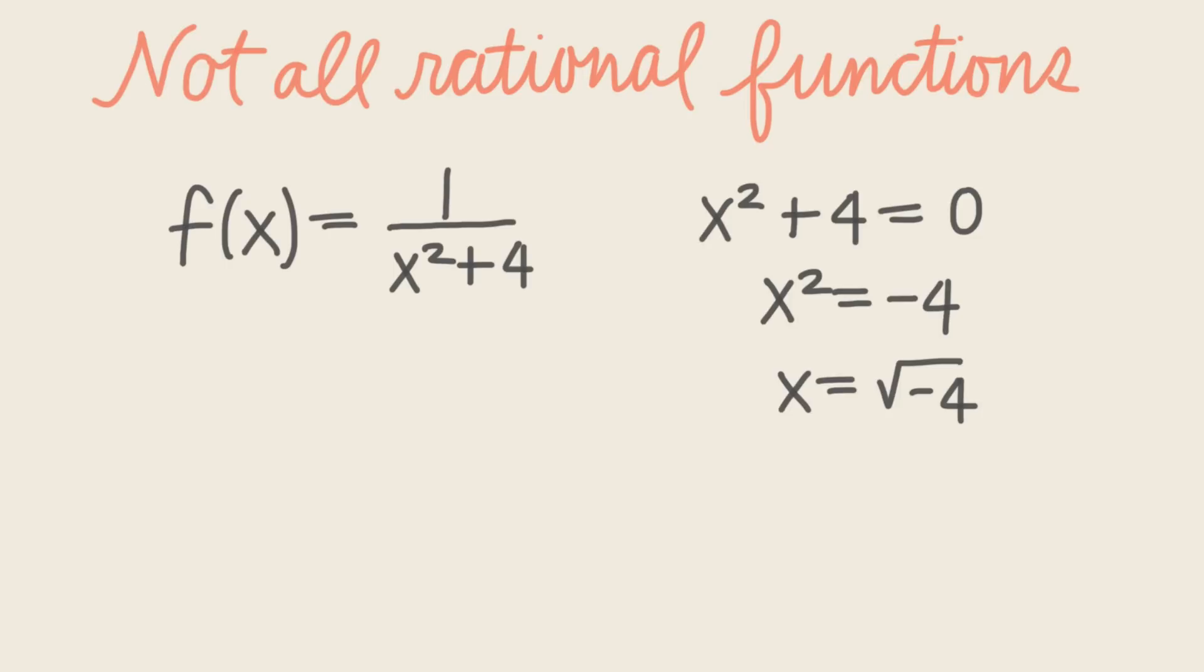Of course, not all rational functions have vertical asymptotes. There are plenty of rational functions with denominators that are never equal to 0, such as this equation, 1 over x squared plus 4. If we set this denominator equal to 0 and try to solve for x, we get that x is equal to the square root of negative 4, which is not a real number, and therefore, this is not a vertical asymptote.